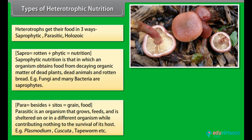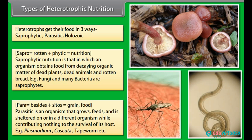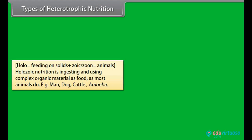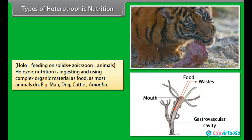Parasitic nutrition — para means beside and cytos relates to feeding — refers to an organism that grows, feeds, and is sheltered on or in a different organism while contributing nothing to the survival of its host. Examples include plasmodium, tapeworm, and others. Holozoic nutrition — holo means feeding on solids and zoic relates to animals — is ingesting and using complex organic material as food, as most animals do. Examples include humans, dogs, cattle, and amoeba.